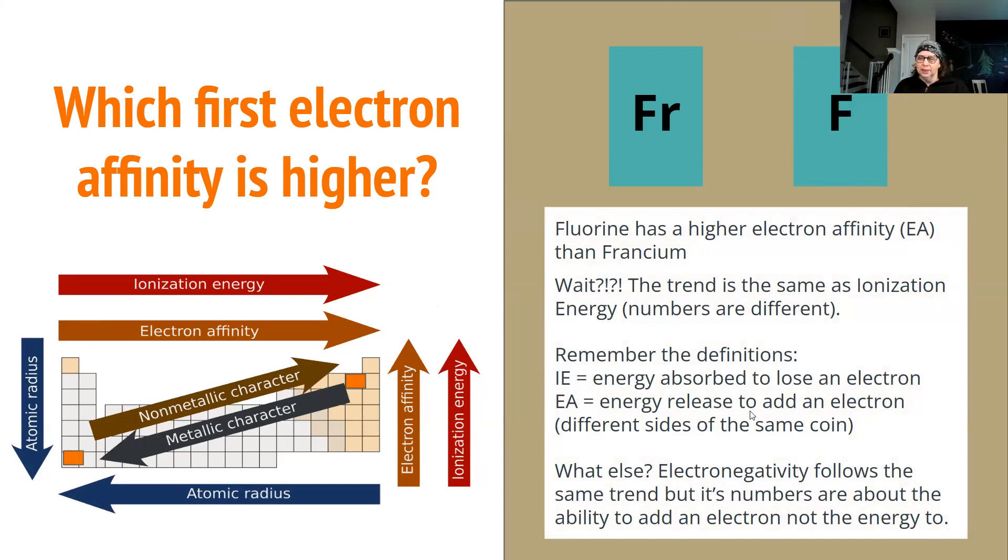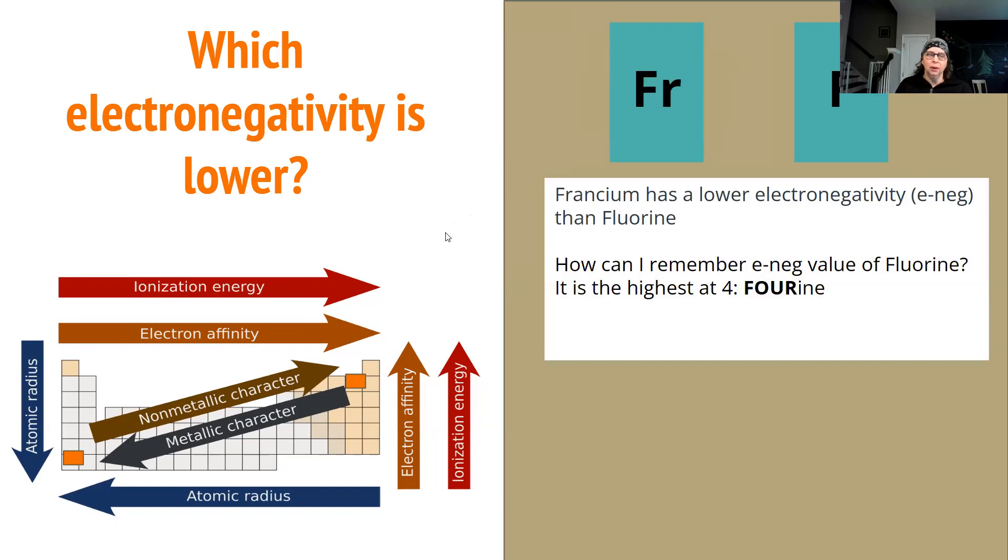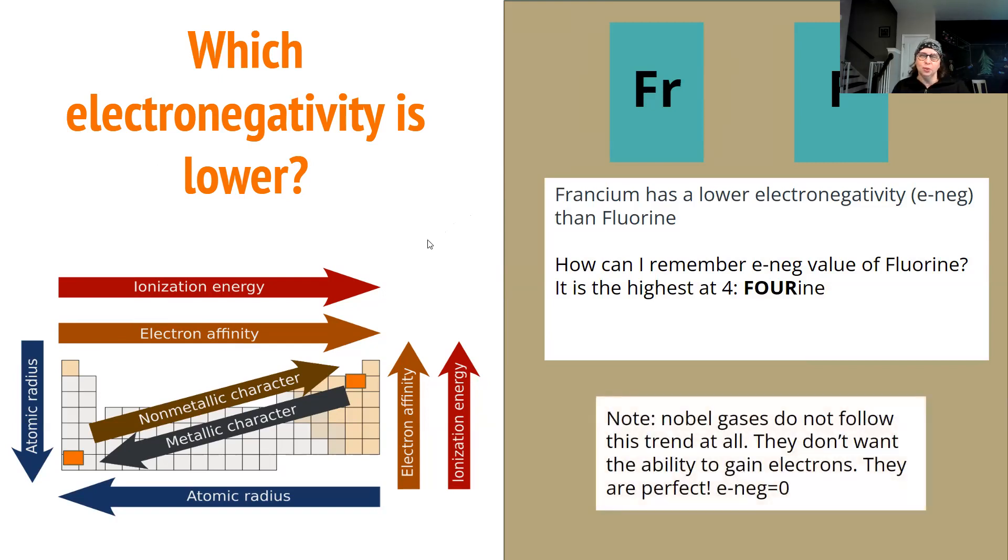Now, electronegativity, guess what? It's not on this picture, but it follows the same trend, but that is not about the energy. It's about the ability to take in electrons. So if you have a high electronegativity, you have a high ability to take in electrons. So when we ask the question, which electronegativity is lower, francium is the lowest on the board. So low electron affinity, low electronegativity. And noble gases, this one does not follow the trend. Noble gases have zero electronegativity. Why? They don't want an ability to get an electron. Their crown is perfect. They don't need to add anymore. They think they're perfect as is and they do not want to change.